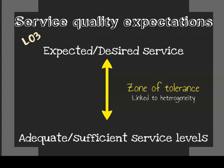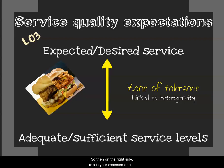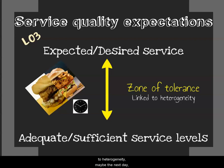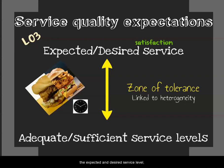Imagine a KFC advertisement — on the right is what you expect the burger to look like, but on the left is what you actually receive. You then decide: is this adequate and sufficient, or does it go past your zone of tolerance? Remember, this changes over time. When you are a student and pay 20 bucks for a crunch burger, you might accept the left picture. But as you grow older and pay more, your expectations change. If the expected service level is what is delivered, you are satisfied; if it falls short, you are dissatisfied.